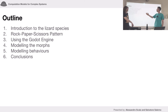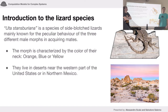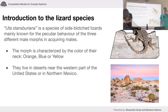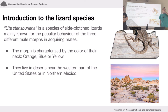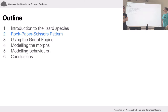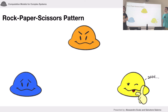Let's start by introducing the lizard species. The Utah-Strasburiana is a species of side-blotched lizards mainly known for their behavior in mating. Depending on the morph of the male — identified by the color of their neck — it can either be orange, blue, or yellow. These lizards live in the desert near the western United States and northern Mexico.